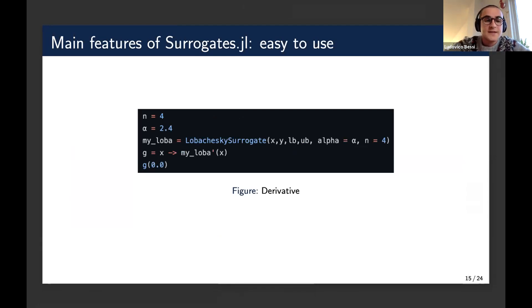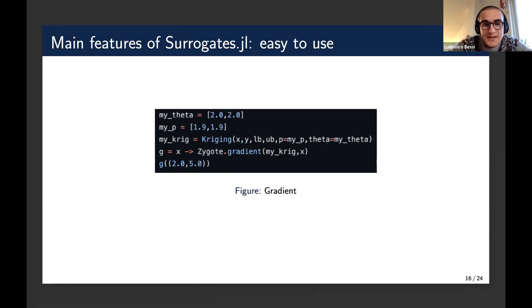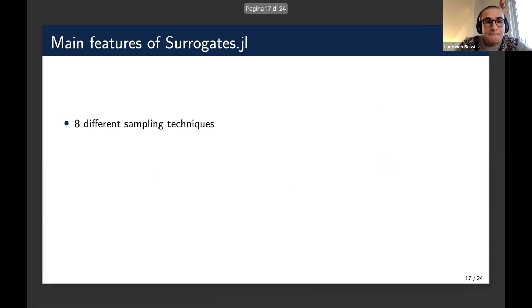Now, moving on to the derivatives and gradients. Very easily, we could just have, again, still another surrogate, and we can just call the derivative of this surrogate. This is important because, for instance, many optimization techniques are not derivative-free, so it's important to be able to evaluate the derivative and the gradient as well. As you can see here, we're using it like that.